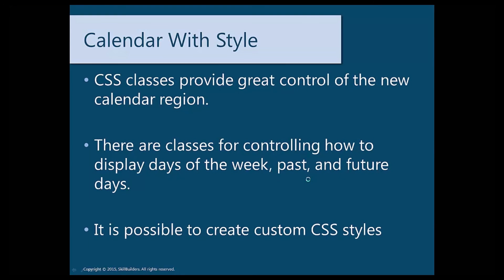We talked about how CSS classes can provide a great amount of control over calendar regions. There are many different types of classes you can use to color-coordinate different parts of your calendar — ranging from days of the week to more general indicators like past or future. And always remember it is possible to create any custom CSS styles as needed. Good luck and happy calendaring — I hope you enjoy the new calendar in Apex 5.